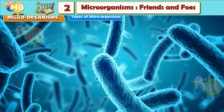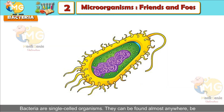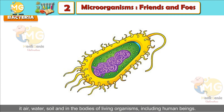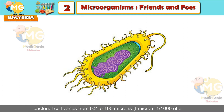Types of Micro-Organisms: Bacteria. Bacteria are single-celled organisms. They can be found almost anywhere — be it air, water, soil, and in the bodies of living organisms, including human beings. These are amongst the simplest and very small living beings. The size of a bacterial cell varies from 0.2 to 100 microns. One micron is equal to 1/1000 of a millimeter.